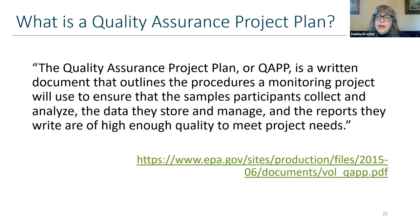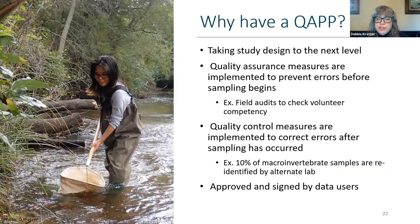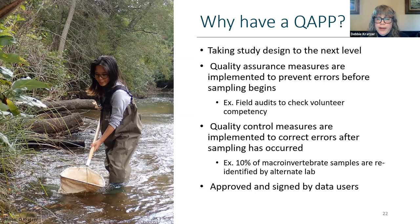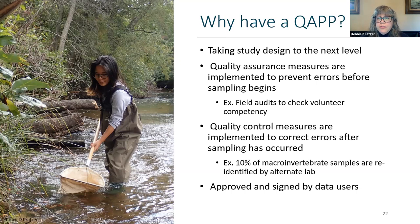A QAPP takes your study design to the next level — adding measures to prevent errors before sampling begins, such as training and field audits and the macroinvertebrate tests we'll be doing, to assure that everyone understands how to collect the data the same way. Another quality control measure is knowing how to correct errors after sampling has occurred — for example, checking a percentage of macroinvertebrate samples with another person or lab. If you want DEP to use your data, DEP needs to be the one to sign your QAPP.